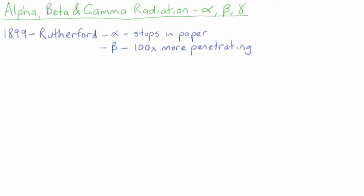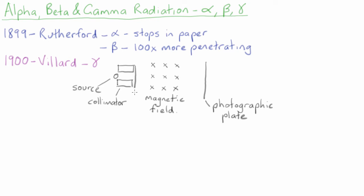He used a piece of equipment that looked something like this. The radiation that's emitted from the source goes through the collimator. The alpha radiation was stopped in the lead foil, and the other radiation could penetrate through and pass through the magnetic field.